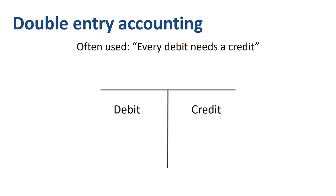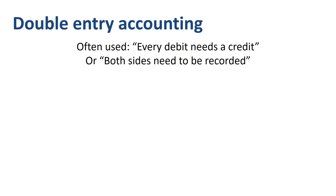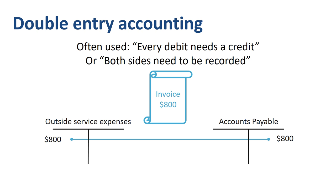Another way of describing double entry accounting is that both sides of the journal entry need to be recorded. As a lot of journal entries simply have one debit and one credit, in most cases this is a correct statement.